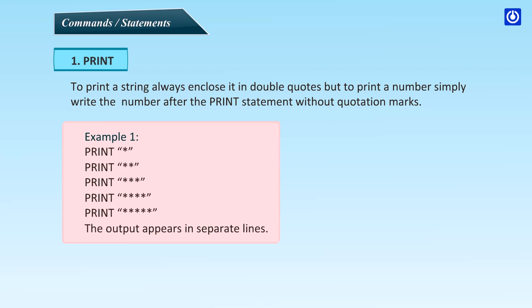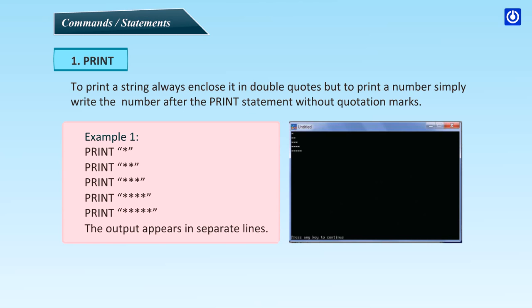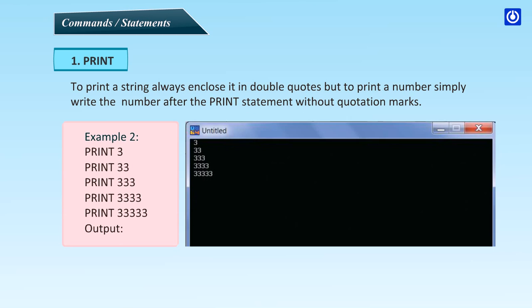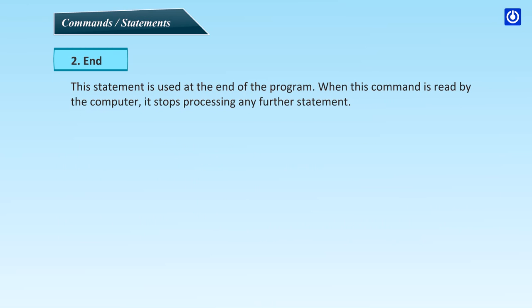Example 1 — printing stars: PRINT "*", PRINT "**", PRINT "***", PRINT "****", PRINT "*****" — the output appears in separate lines. Example 2: PRINT 3, PRINT 33, PRINT 333, PRINT 3333, PRINT 333. END: this statement is used at the end of the program. When this command is read by the computer, it stops processing any further statements. Syntax: END.